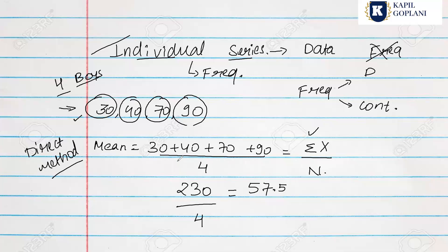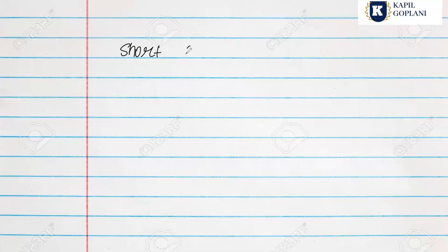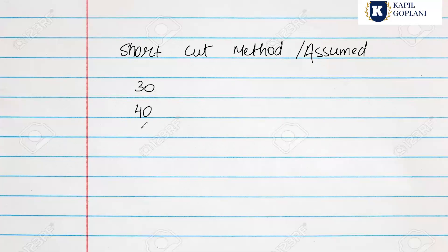Now we will solve the same question using the Assumed Mean Method, also called the Short-cut Method. In this method, from the given observations (30, 40, 70, 90), we assume one number. Let's say I am assuming 70 as my assumed value 'A'. Now I will calculate deviations — D = X minus A.